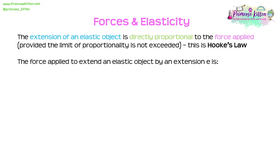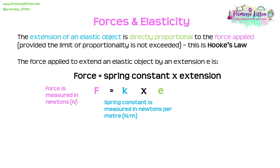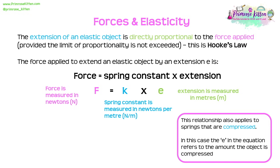The extension of an elastic object is directly proportional to the force applied, provided the limit of proportionality is not exceeded. This is called Hooke's Law. The equation is: force equals spring constant times extension, or F = ke. F is force in newtons, k is the spring constant in newtons per metre, and e is the extension in metres. This relationship also applies to compressed springs, where e represents the amount of compression rather than extension.